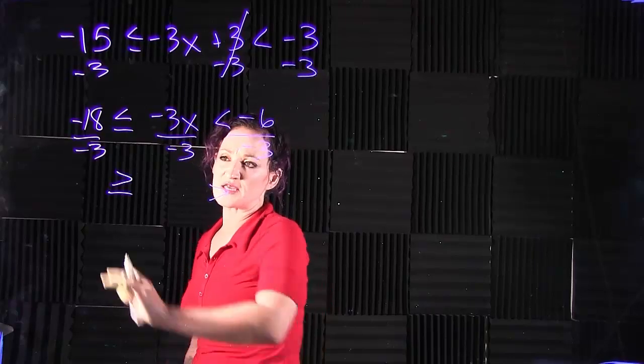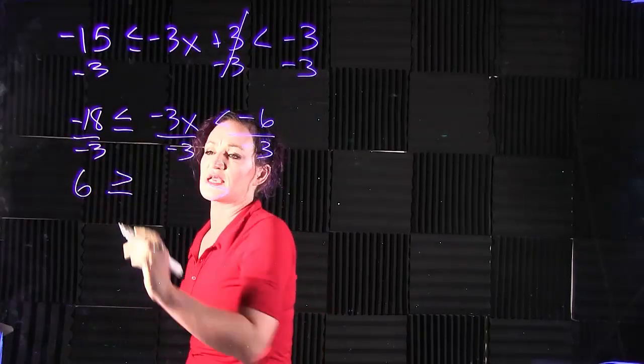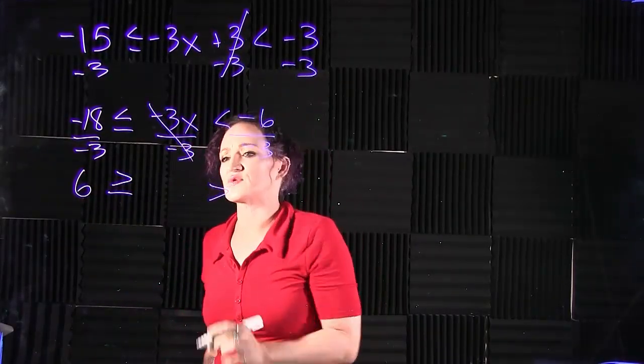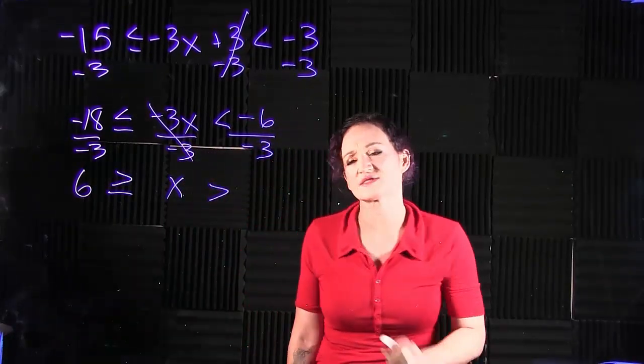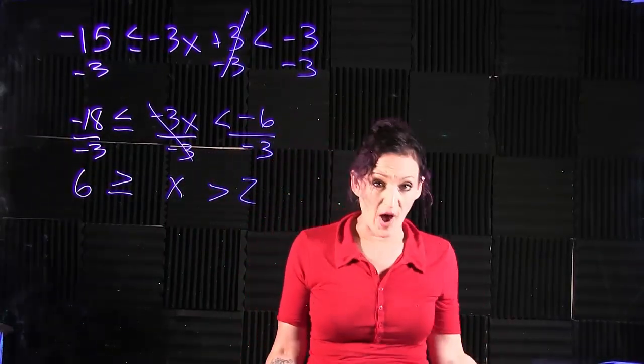Otherwise divide is normal. Negative over negative is positive, 18 over 3 gives us a 6. The negatives 3 cancel out, leaving us with x. And on the right-hand side we get a positive 2.